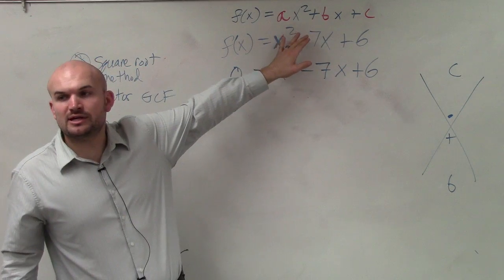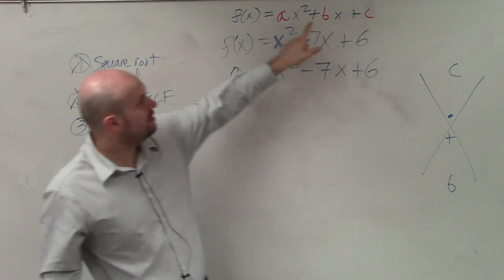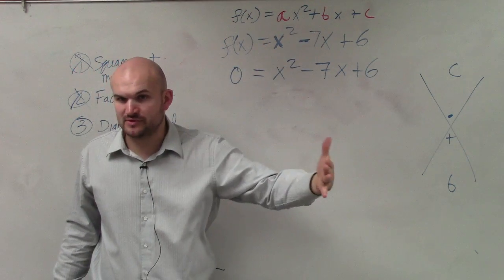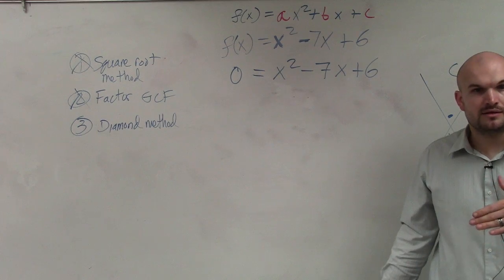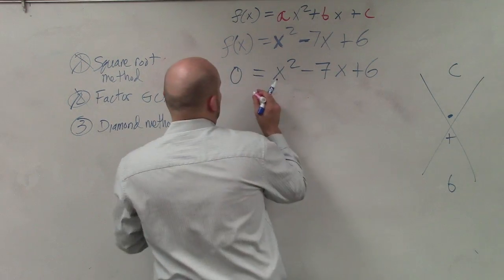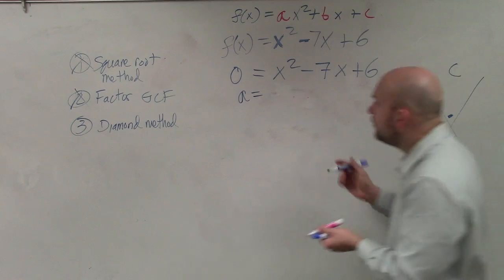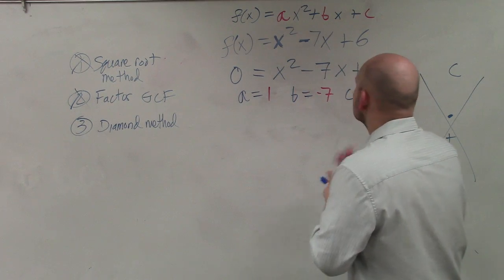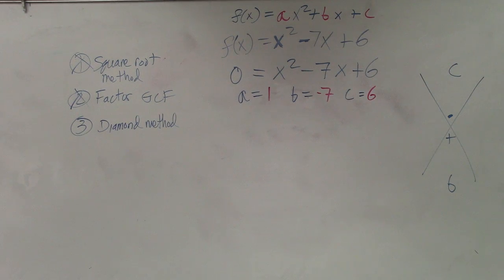The standard form of a quadratic was f of x or y equals ax squared plus bx plus C. And remember, to find the axis of symmetry, we had to identify what was a, what was b, right? So let's do that again. In this case, you can say a is equal to, what is the number in front of x? 1. What is b? Negative 7. And C is 6. Does everybody agree with me on this? All we've done is labeled our problem.